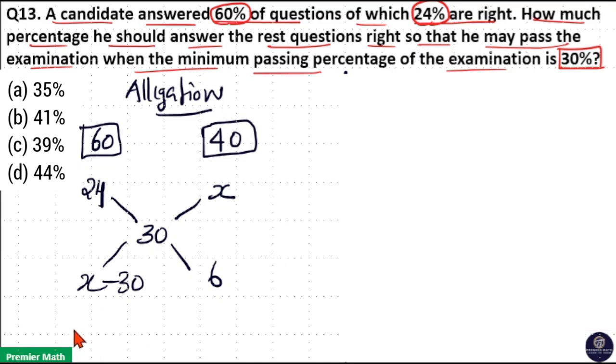Taking the ratio of left-hand side to right-hand side: x minus 30 over 6 equals 60 over 40, because LHS is 60 and RHS is 40.